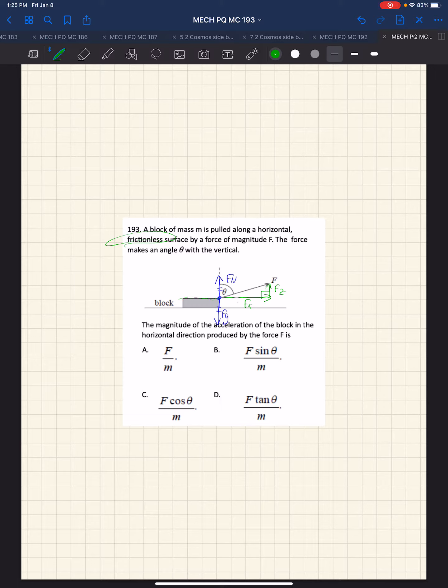The magnitude F, the force theta with the vertical. In that case, the magnitude of the acceleration of the block, so we have F net equals ma.